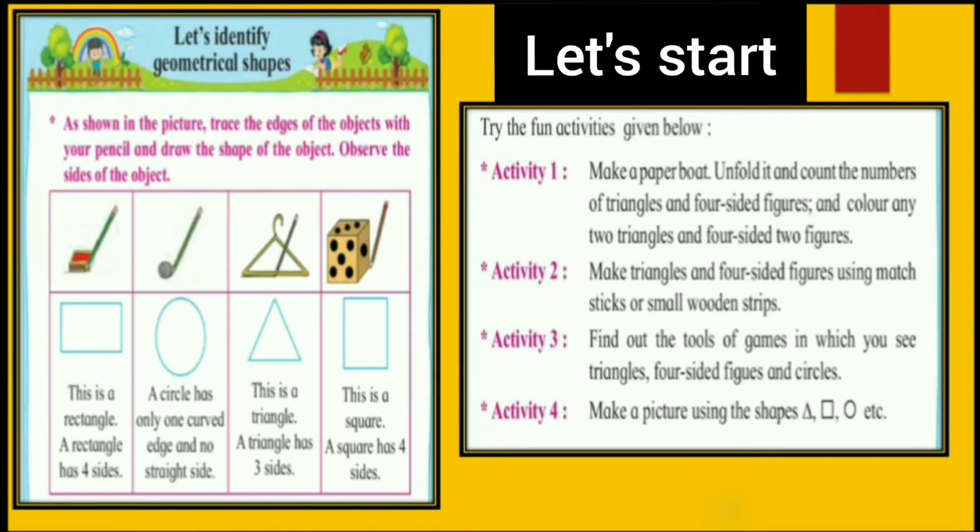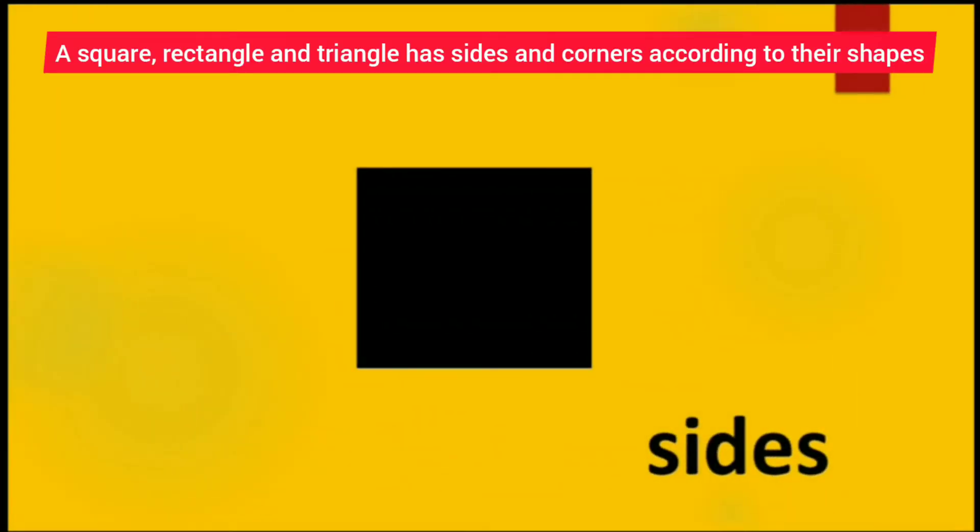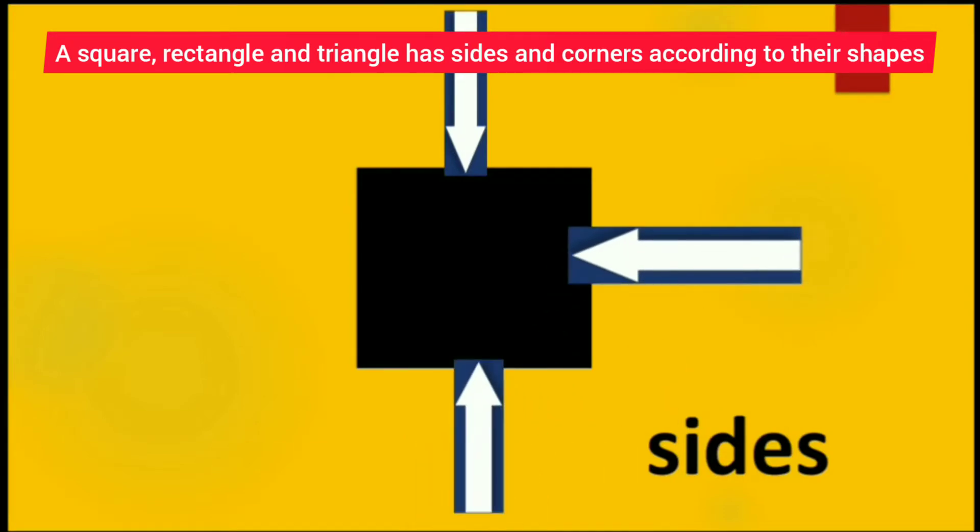And today we will learn how to identify the different geometrical shapes. This is a square and a square has 1, 2, 3 and 4. A square has 4 sides.